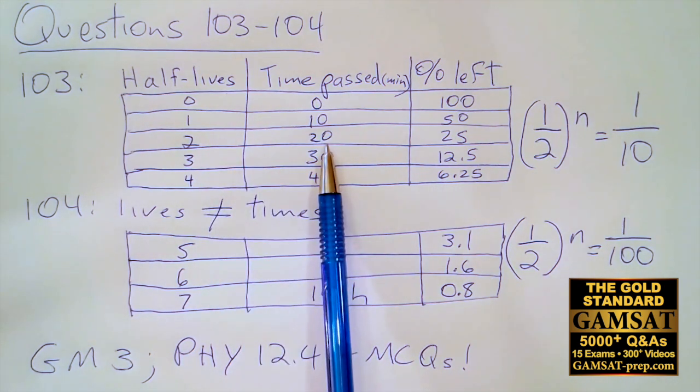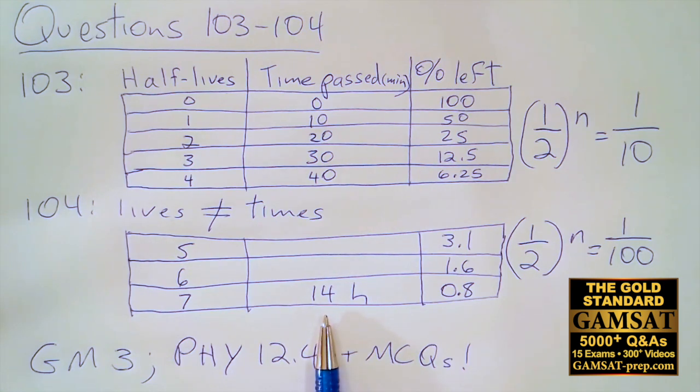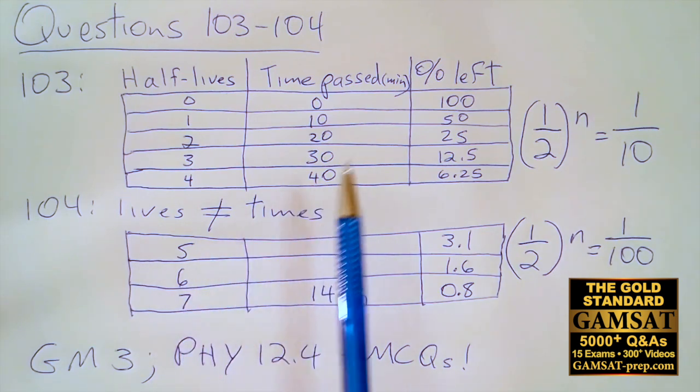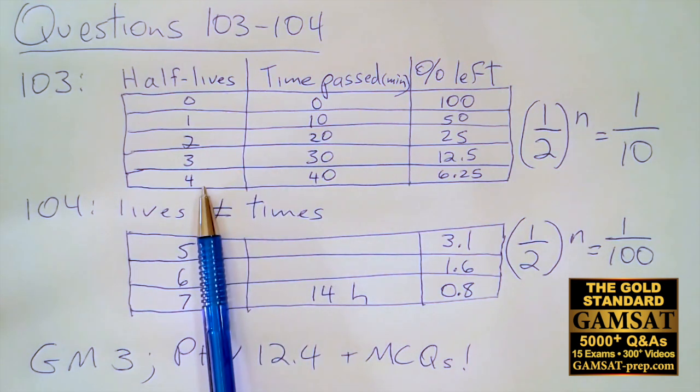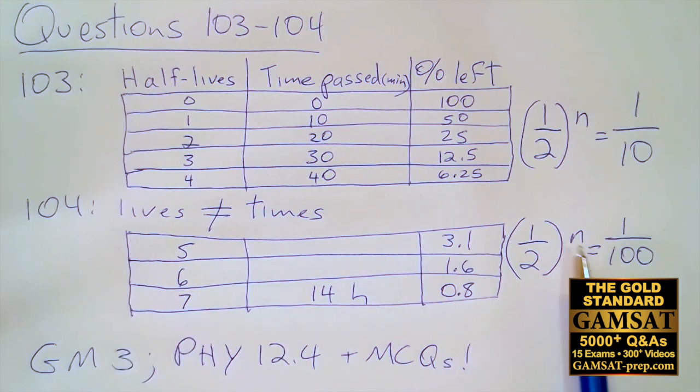Let's take 14 hours. Remember how one half-life was 10 minutes, so 4 half-lives had to be 40 minutes (10 times 4)? Now we go in reverse. We have 14 hours for 7 half-lives, so that means one half-time has to be 2 hours (14 hours divided by 7). Just as we divided by half-lives in question 103, we do the same for question 104. The answer for 104 must be B.